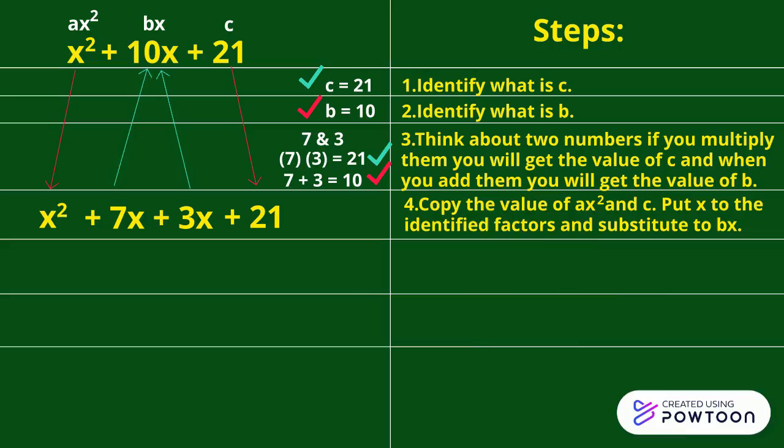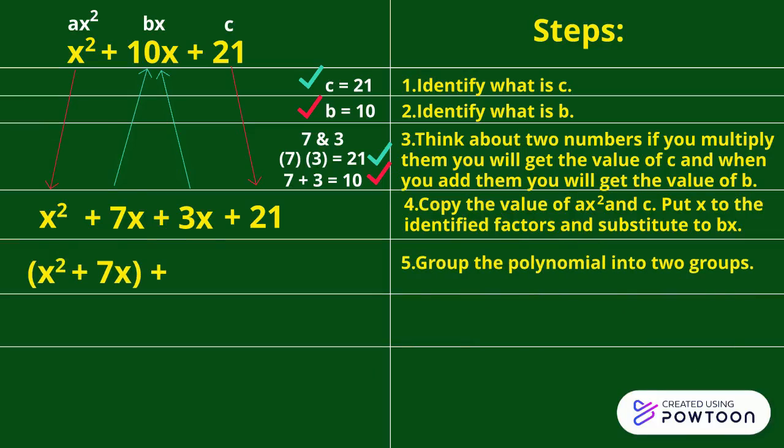Fifth step. Group the polynomial into two groups. X squared and 7X will be the first group. And 3X plus 21 will be our second group.